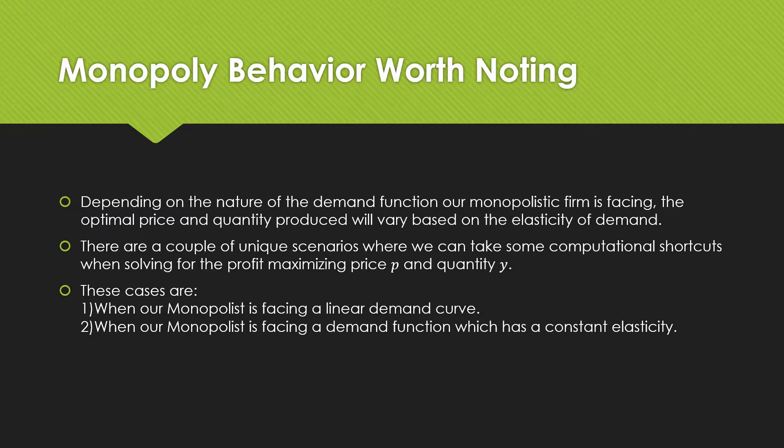So depending on the nature of the demand function our monopolistic firm is facing, the optimal price and quantity produced will vary based on the elasticity of demand. There are a couple of unique scenarios where we can take computational shortcuts when solving for our profit maximizing price p and quantity y. These cases are when our monopolist is facing a linear demand curve, and our second case is where our monopolist is facing a demand function which has a constant elasticity.